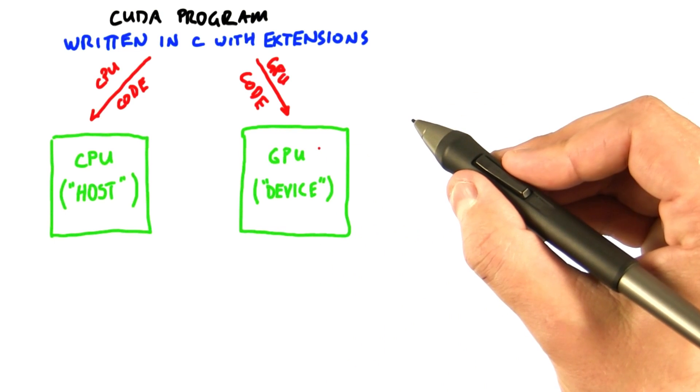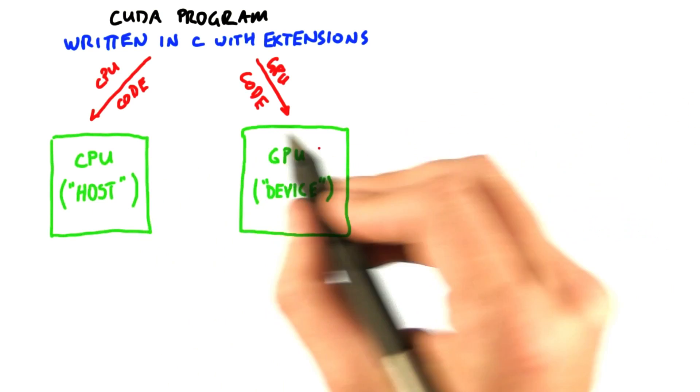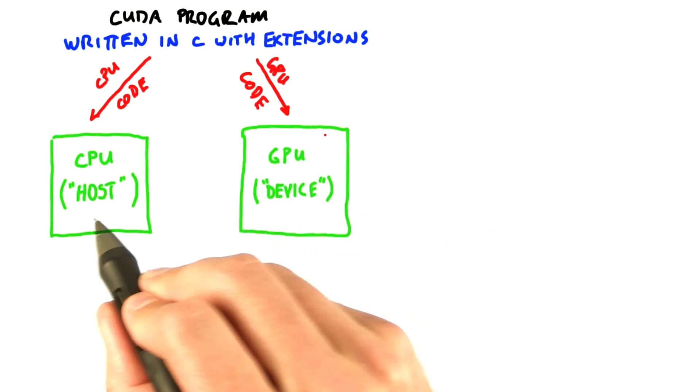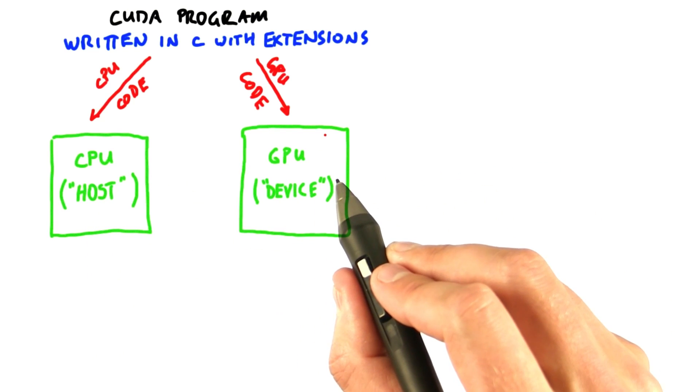The CUDA compiler will compile your program, split it into pieces that will run on the CPU and the GPU, and generate code for each.